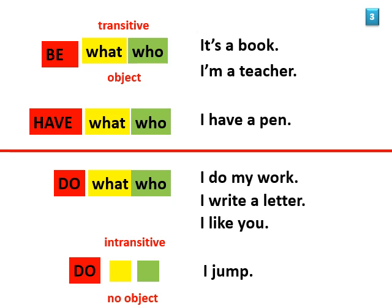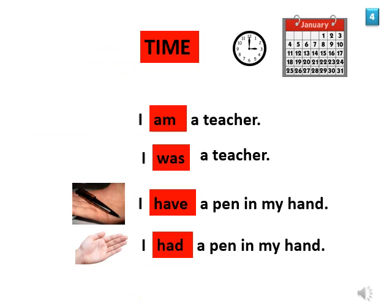All action takes place in time, so besides showing action, the verb has another very important job: it shows time. If I say 'I am a teacher,' it shows I'm a teacher now. If I say 'I was a teacher,' it shows I was a teacher sometime in the past — yesterday or some years ago. So I can say 'I have a pen' or 'I had a pen in my hand.'